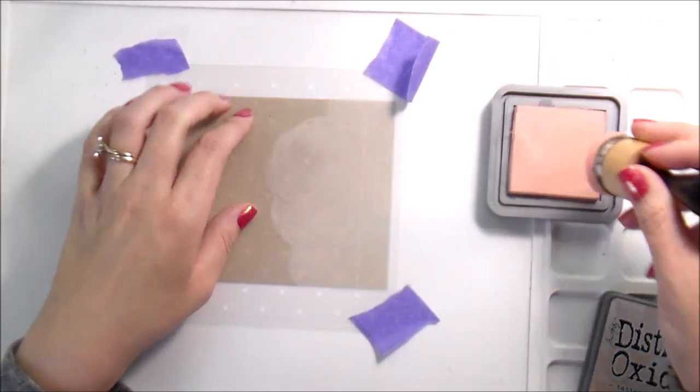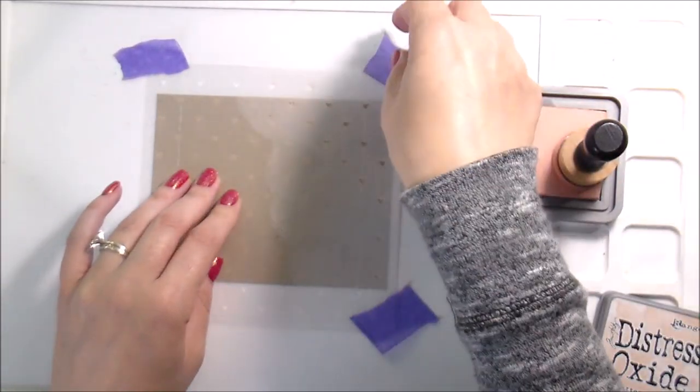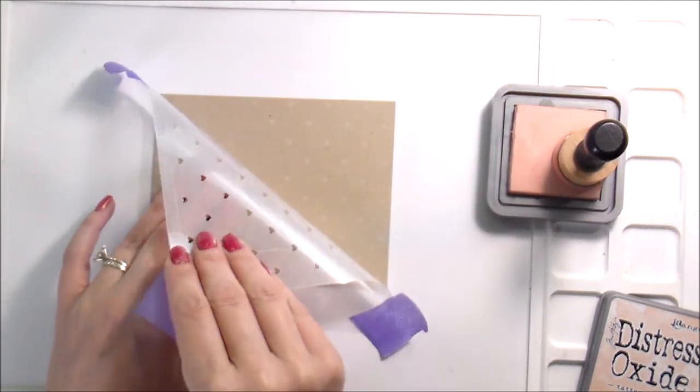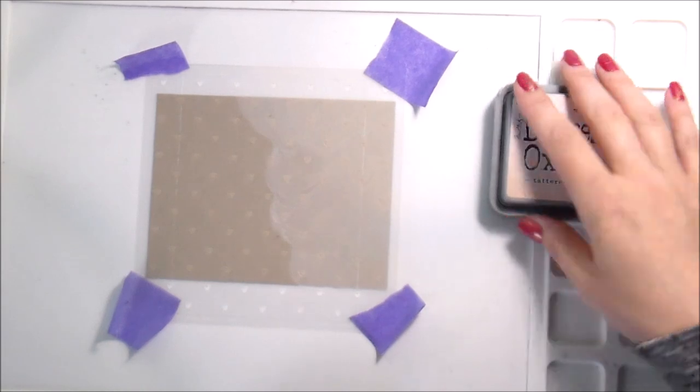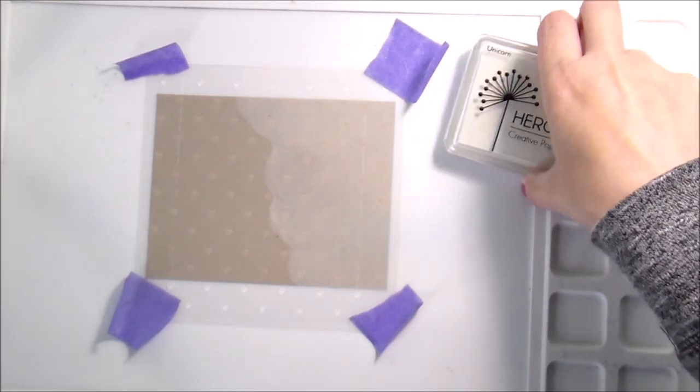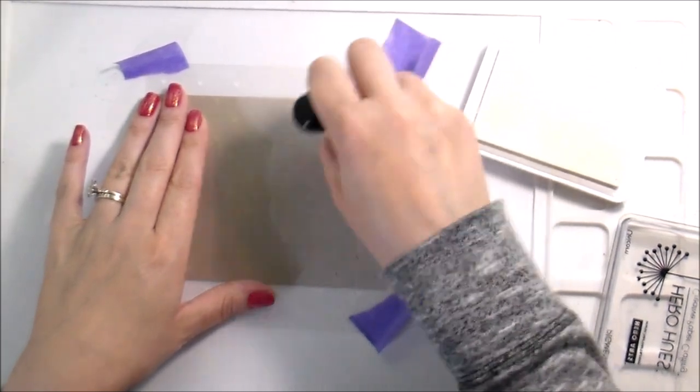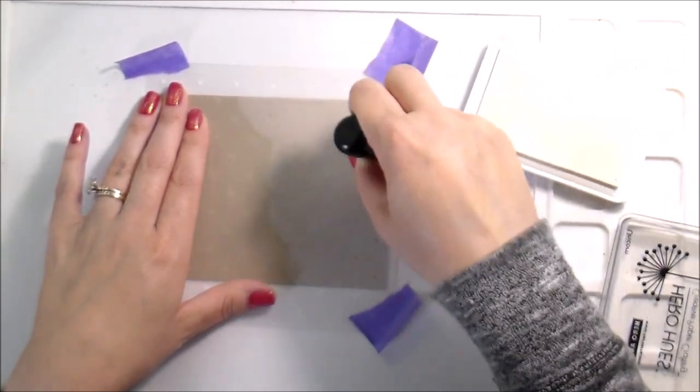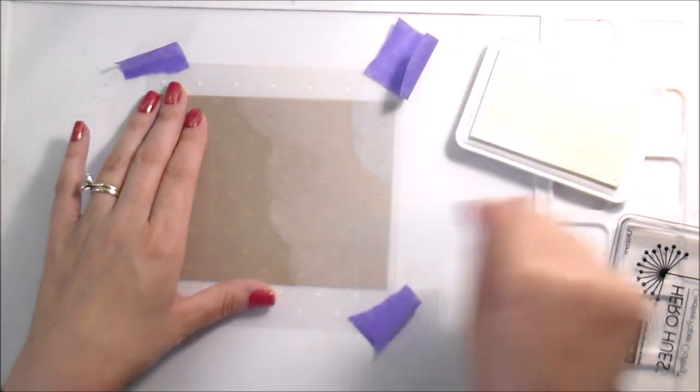I am using Tattered Rose Distress ink and I have taped down my stencil, even though I know that I don't like that. The Tattered Rose wasn't showing up on the craft as much as I wanted. So I switched over to Hero Arts Unicorn Pigment Ink because I really wanted them to kind of pop off the page and that worked much better.